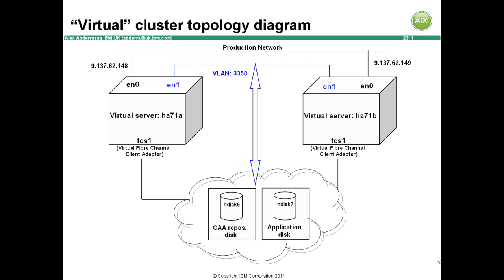Remember a virtual adapter is not real and therefore is not a single point of failure. In this case the single point of failure is the hypervisor, so having multiple virtual adapters does not make any sense. In this example the network resilience is offloaded to the virtual IO server.